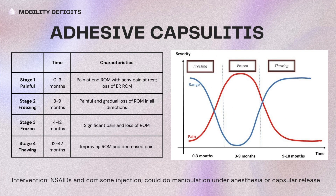Adhesive capsulitis goes through phases: it is really painful, then it freezes, then it's frozen, and then it thaws — a process that can be very long. In the first stage, they have pain in range with achy pain at rest and begin to lose external rotation range of motion. The capsular pattern for the shoulder is loss of range of motion greater for external rotation, then abduction, then internal rotation.